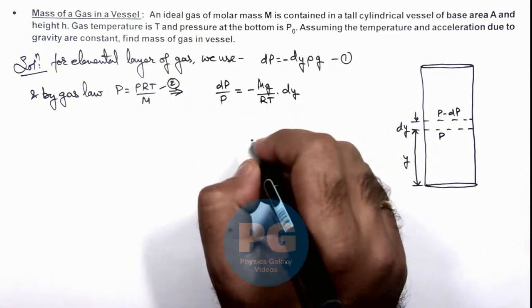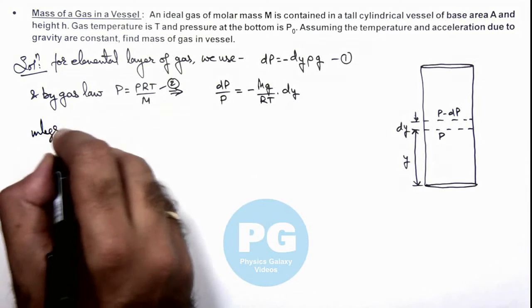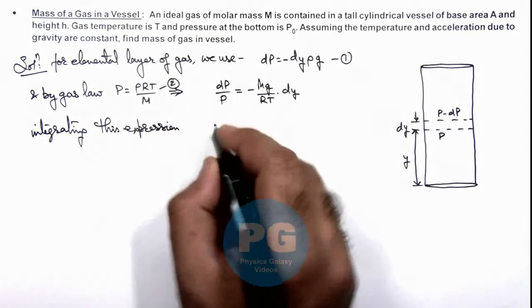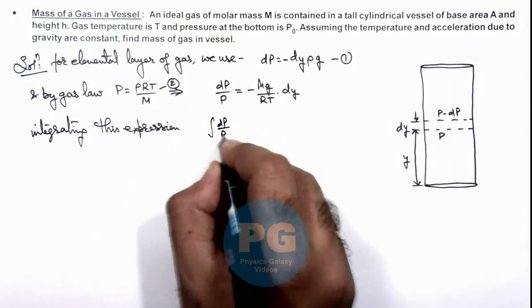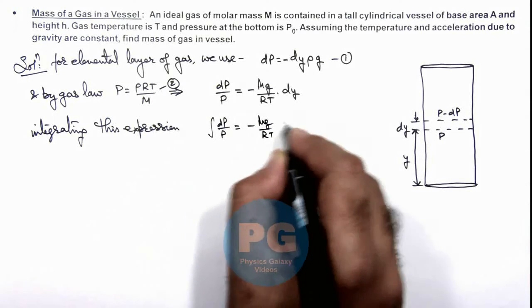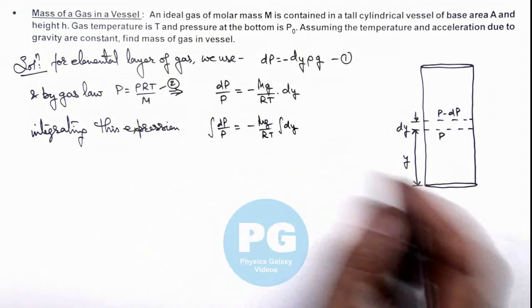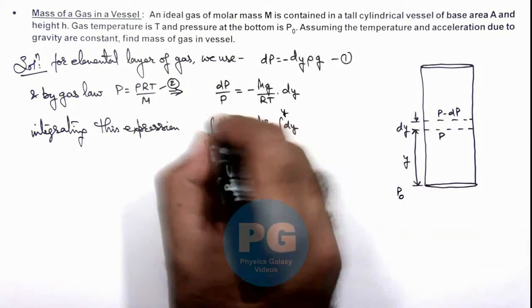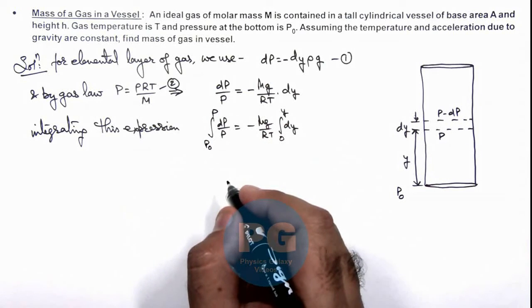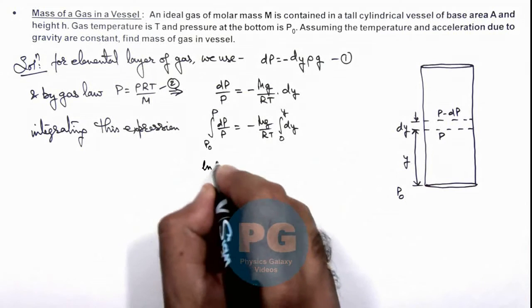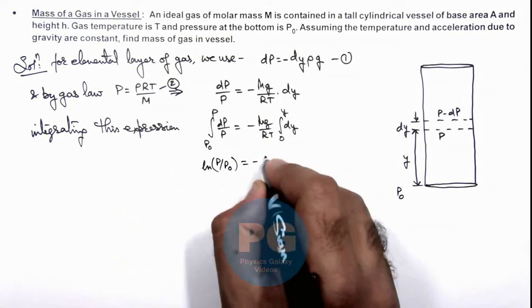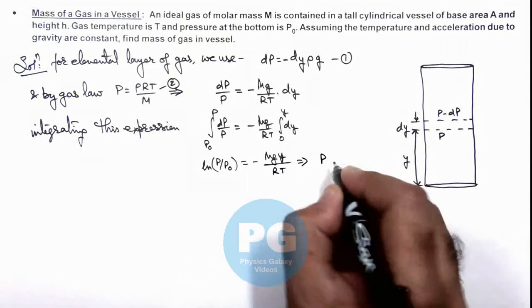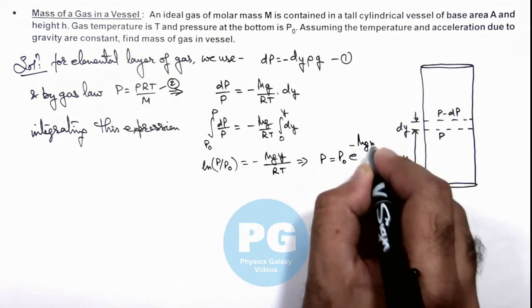And now if we integrate this expression, integrating this expression, here we'll be getting integration of dP/P = -Mg/(RT) multiplied by integration of dy. So here we can write at bottom when y was zero we can consider pressure here to be P₀, and at a height y pressure can be taken as P. Now in this situation if we integrate this, this gives us ln(P/P₀) = -Mgy/(RT), which results: pressure at a height y is P₀ e^(-Mgy/RT).